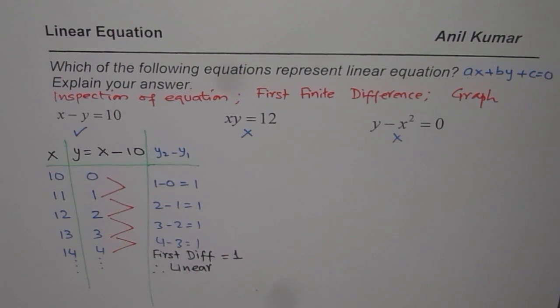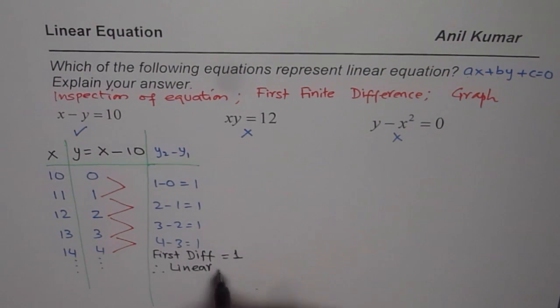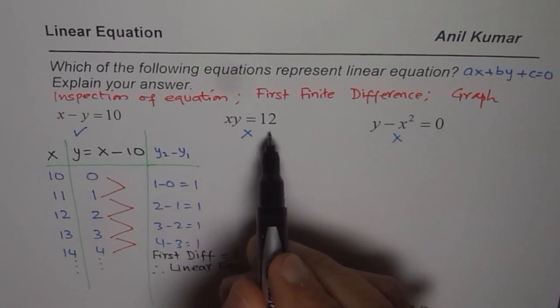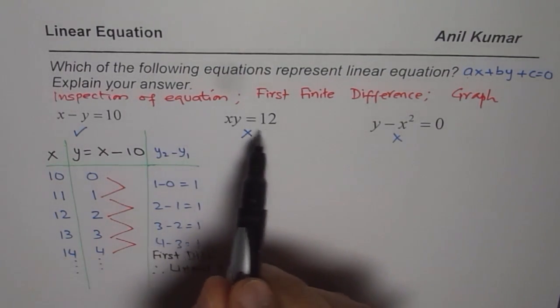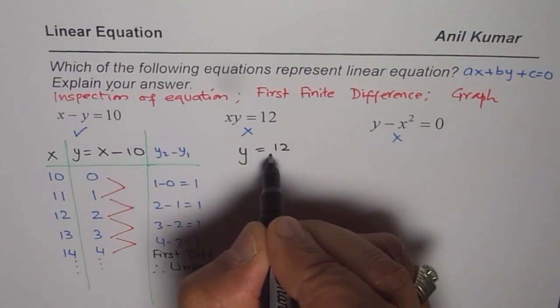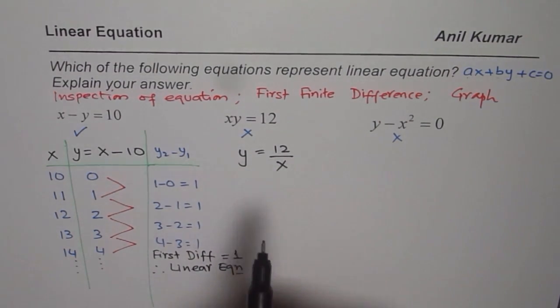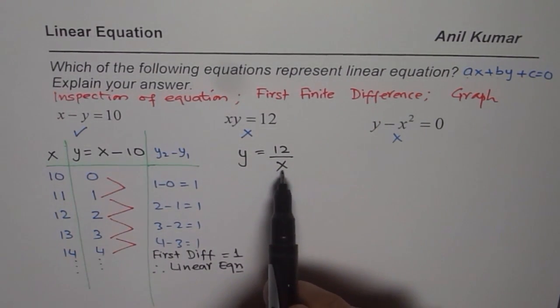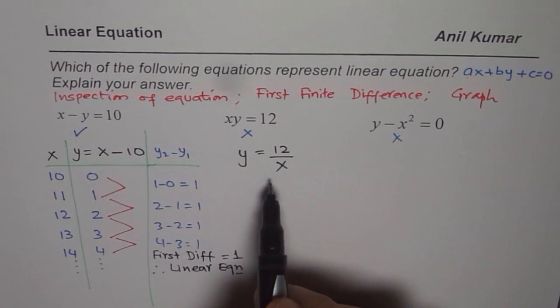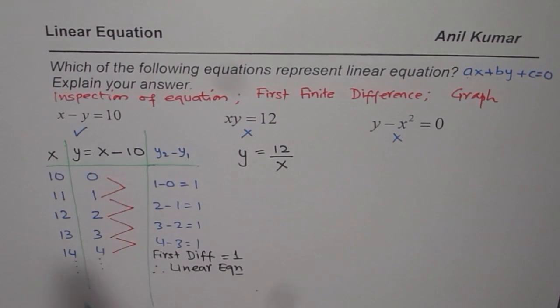That represents a linear equation. Now, in this particular case, if I rearrange the equation for y, what do I get? I get y equals to 12 over x. Now, that is not a linear equation. Second, what you also find is that x cannot be 0. There is a restriction. For a line, there is no restriction. It is all real numbers. Here, we cannot have x equals to 0.